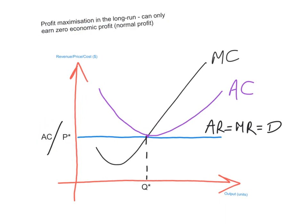We've seen three possible scenarios in the short run. What about profit maximization in the long run? In the long run, a perfectly competitive firm can only earn zero economic profit — only a normal profit. It will look like the previous diagram: MR intersects MC, and price equals average cost at Q star. So why can a perfectly competitive firm only earn normal profit in the long run?